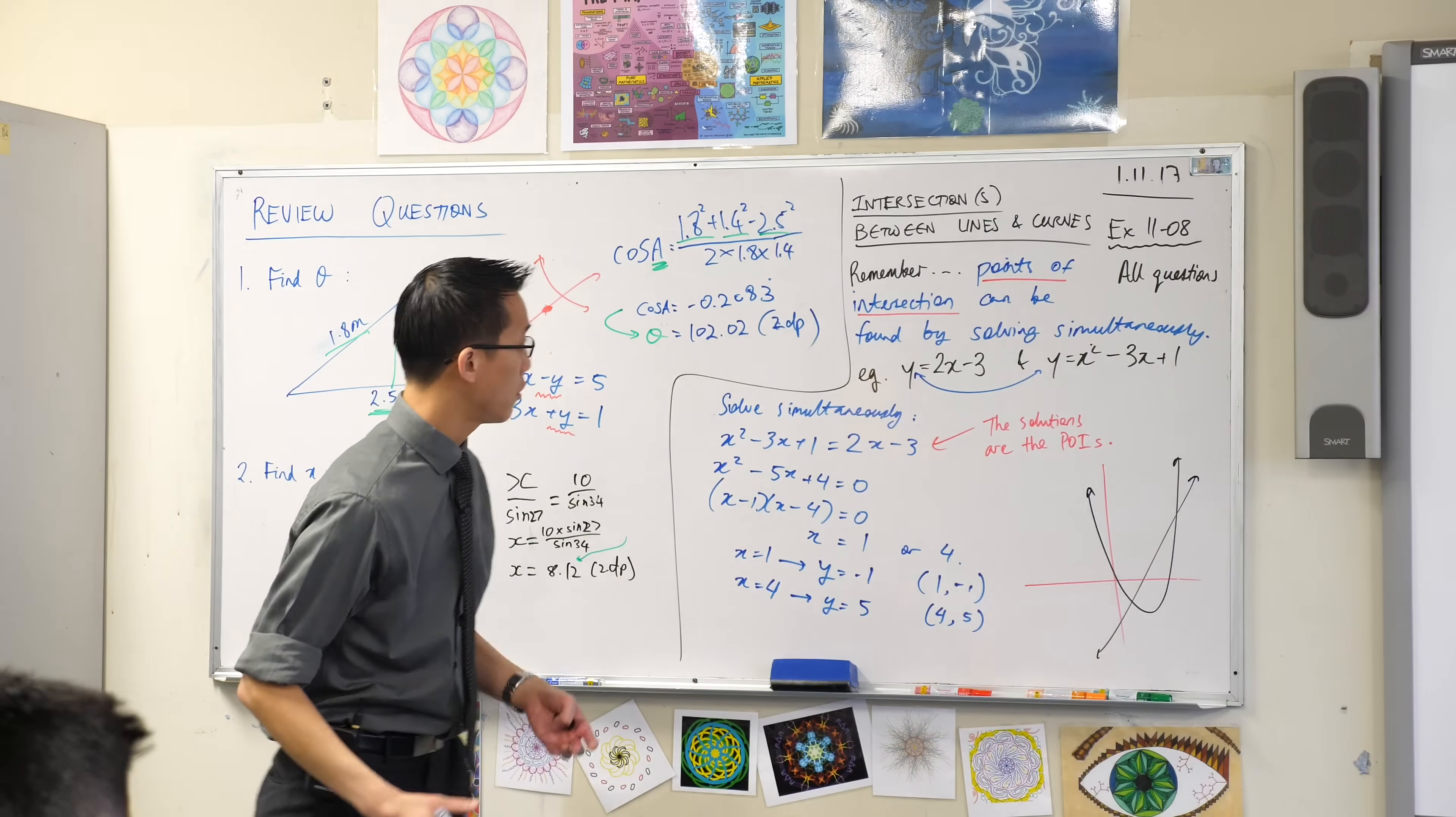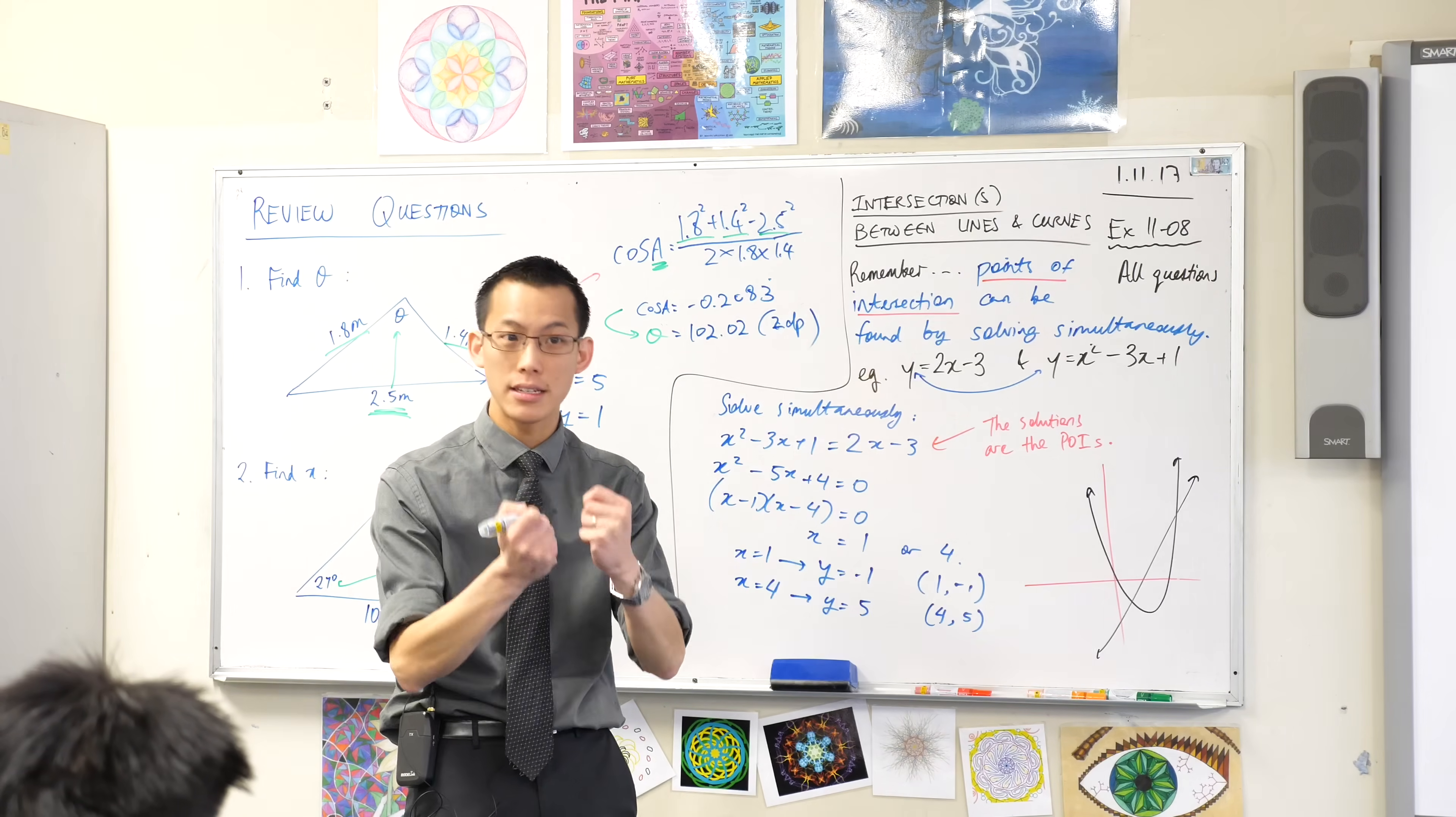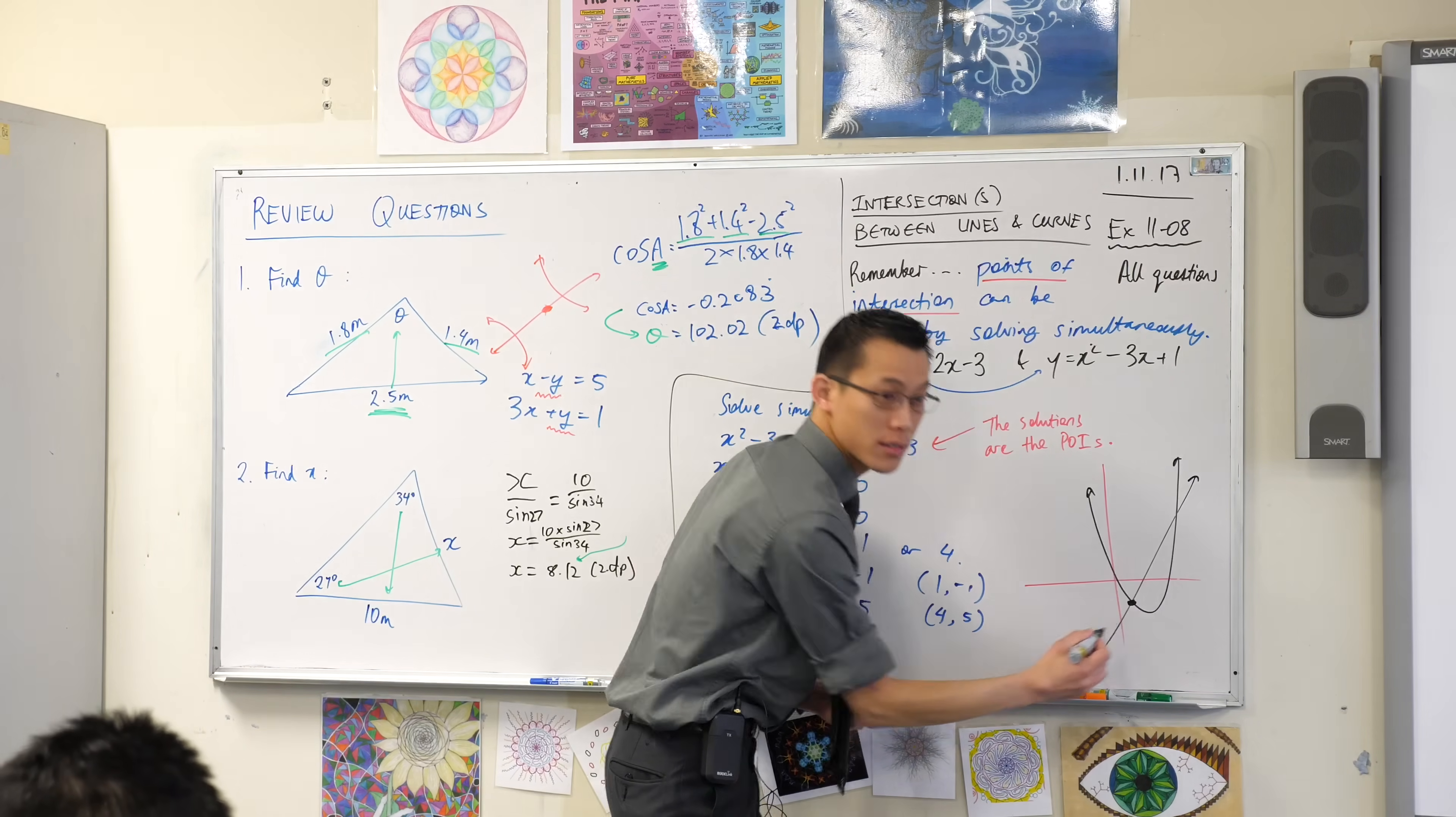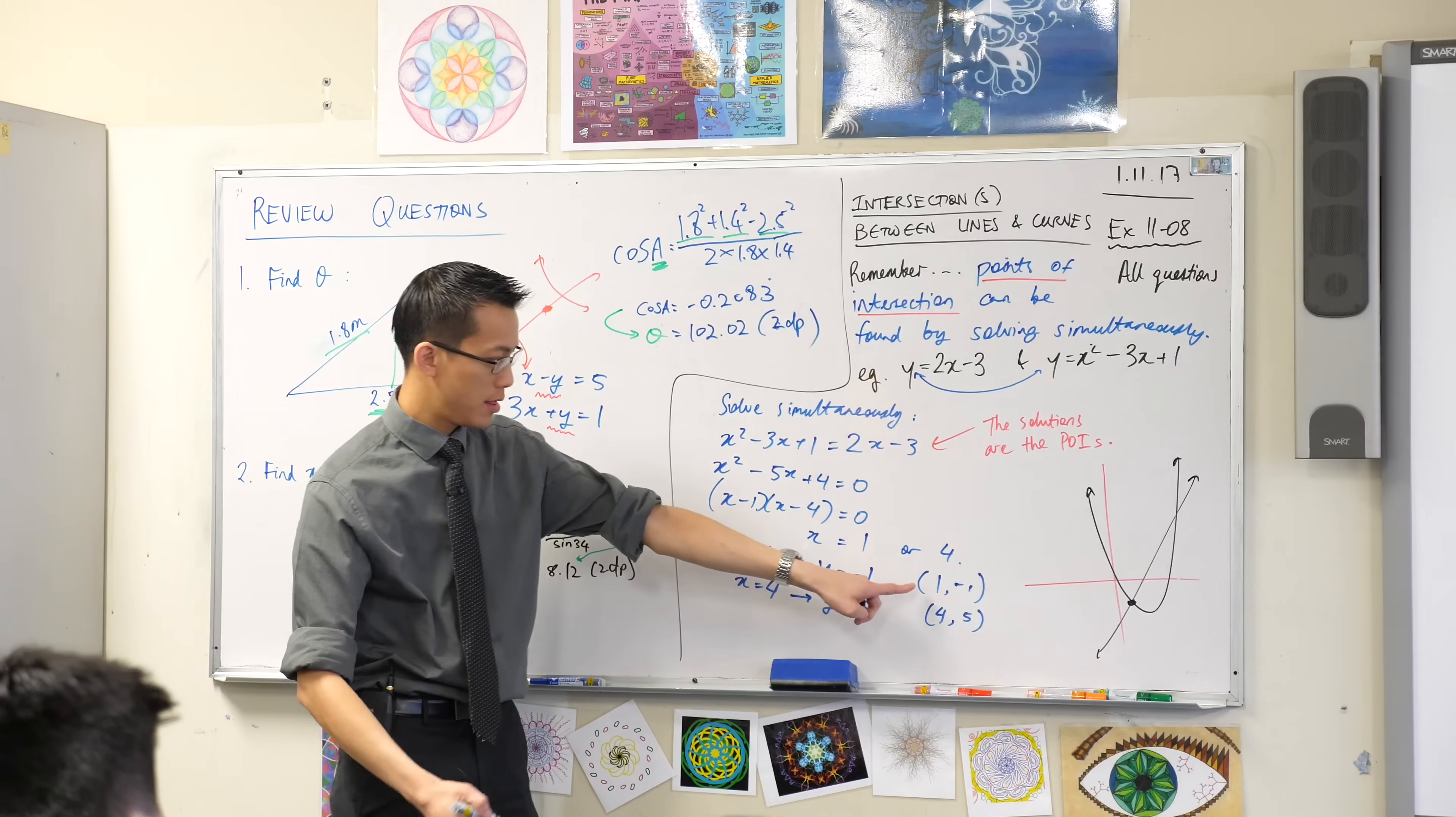So, what am I looking for? I'm looking for where do these two graphs collide, where they intersect. Here's one of the spots. Which one's that? Have a look at the values we found. Yeah, it's this one, right?